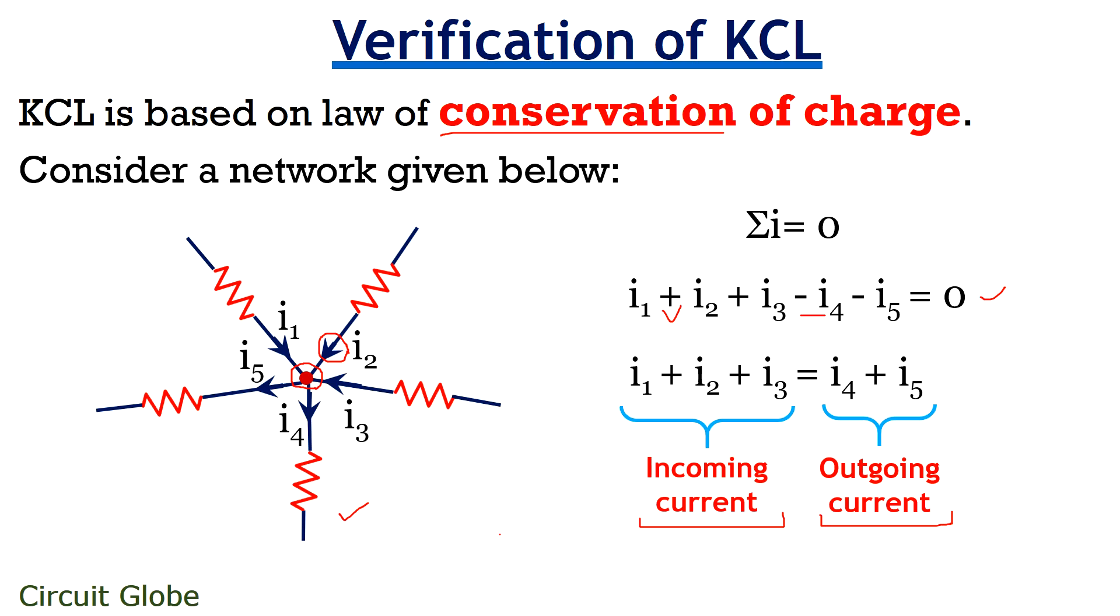Friends, till now you have heard the term junction so many times. But what actually a junction is and how it is differentiated from a node? So friends, a node is a point where two or more than two branches meet. Let us consider this particular point where these two branches are meeting. So this will be called as a node.